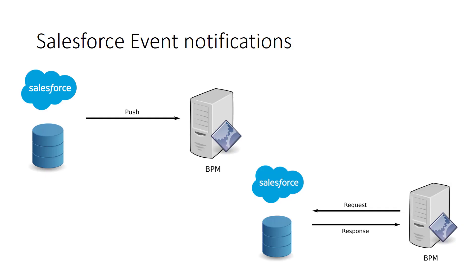The last thing I want to talk about in this overview is the notion of event notification from Salesforce. We can imagine Salesforce and BPM existing separately from each other; however, we might want BPM to be notified when interesting things happen within Salesforce — for example, when an existing record is modified, a new record is created, or a record is deleted. We provide two parallel technologies within the Salesforce toolkit to allow exactly that to happen.